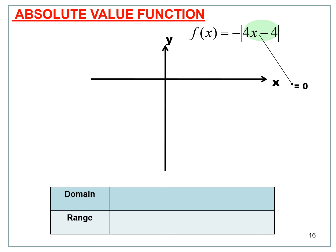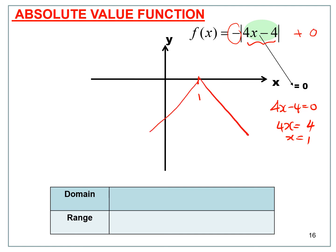For f(x) = -|4x - 4|, set 4x - 4 = 0 to get x = 1, so the graph is symmetric at x = 1. Because the coefficient is negative, the V-shape is inverted — you get an inverted V. The domain is all real numbers, and the range goes from y = 0 downward, giving negative infinity to 0.